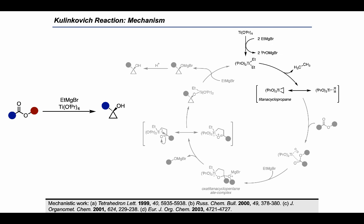These species can react with our ester starting material to form a complex, which, after the addition of a further equivalent of ethylmagnesium bromide, leads to the generation of an oxatitanacyclopentane complex. This intermediate can then expel the alkoxide substituent bearing the red ball, which leads to another mixture of catalytic species. Using the one on the left, we can see how the electron flow can lead to the formation of a cyclopropane ring in the subsequent step.